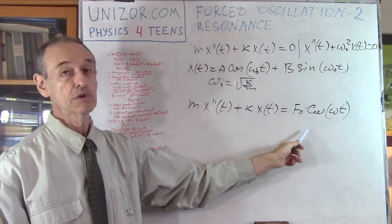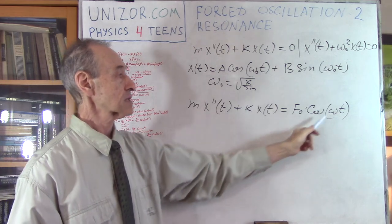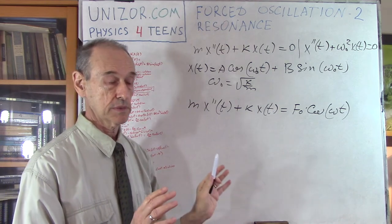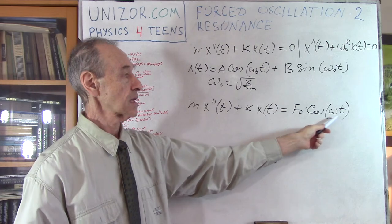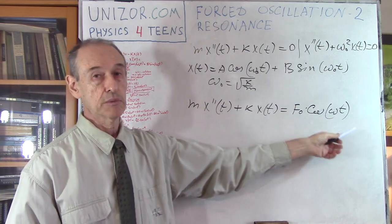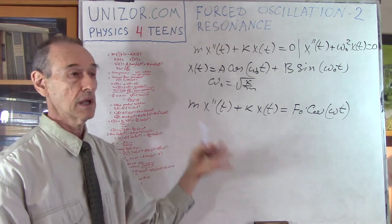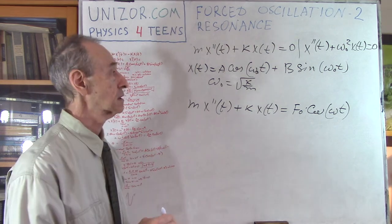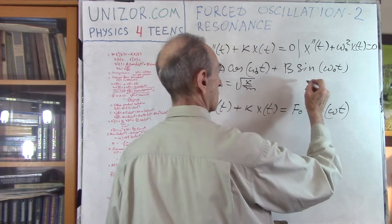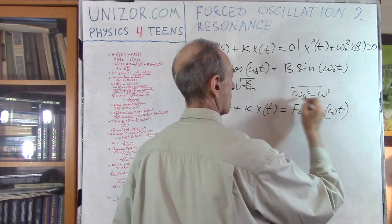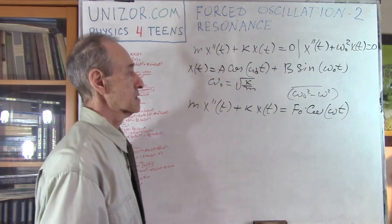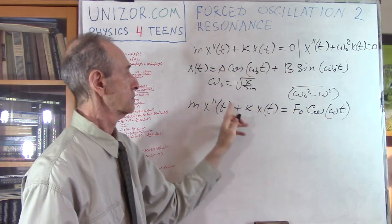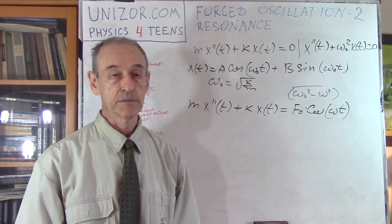That's how we get the general solution to a non-homogeneous equation. In the previous case, when omega and omega_0 were different, we used a particular solution in the format of a constant times cosine(ωt). We found that constant, but the problem was that solution had omega_0² minus omega² in the denominator. So for the case when omega_0 and omega are different, we can do that.